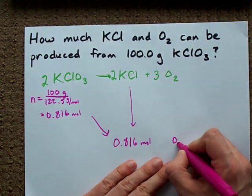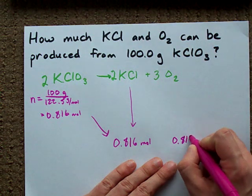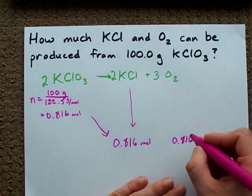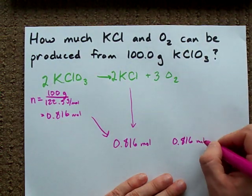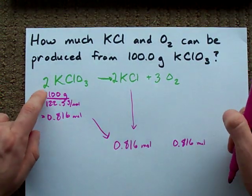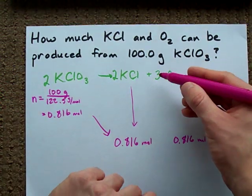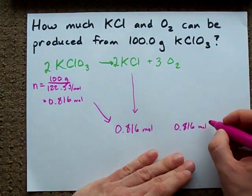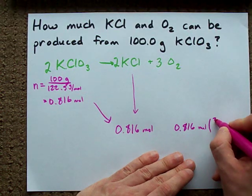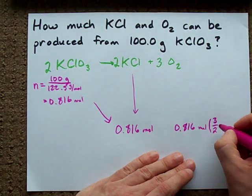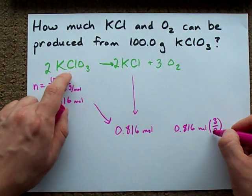Now, for oxygen, it's a little tougher. We're going to make 0.816 moles of oxygen, but actually a little more. See how two turn into three here? What we do is we multiply by a mole ratio. We divide by the number of moles of the thing we started with, and we multiply by the number of moles of the thing we're asking for.